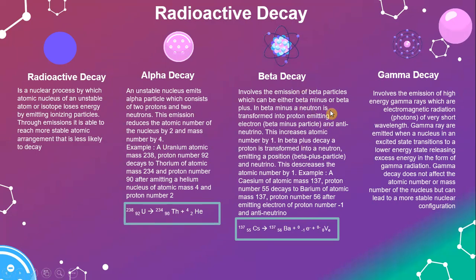Beta decay involves the emission of beta particles, which can be either beta minus or beta plus. In beta minus, a neutron is transformed into a proton, emitting an electron (beta minus particle) and an anti-neutrino. This increases the atomic number by 1. In beta plus decay, a proton is transformed into a neutron, emitting a positron (beta plus particle) and a neutrino. This decreases the atomic number by 1.